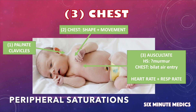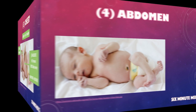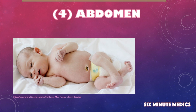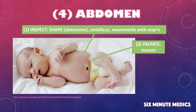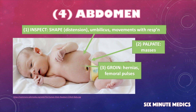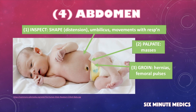Once you have completed this, go on and examine the abdomen. Inspect the abdomen for shape, obvious distension, and look at the movements with respiration. Have a look at the condition of the umbilicus and palpate the abdomen for any masses or inguinal or umbilical hernias. Auscultate for bowel sounds. Move on to the groin and attempt to feel femoral pulses — this is a crucial part of your assessment, as failure to feel femoral pulses may indicate an underlying cardiac defect such as coarctation of the aorta or even critical aortic stenosis.